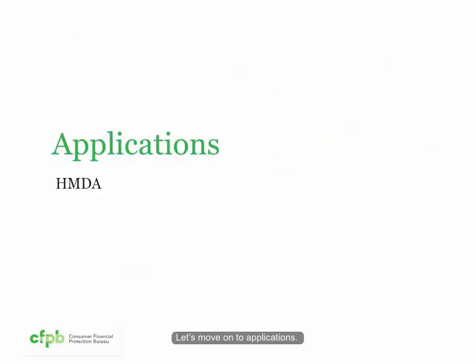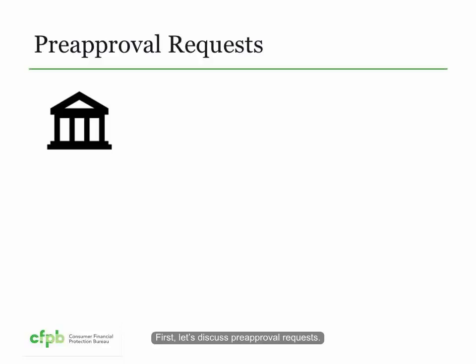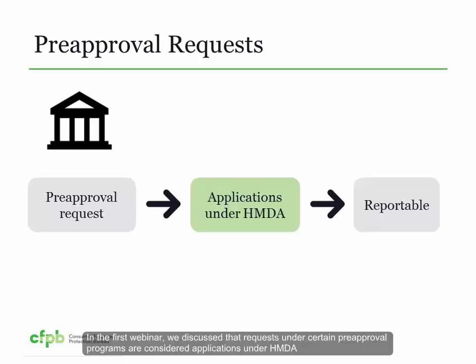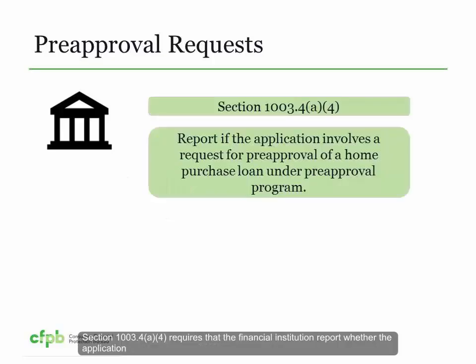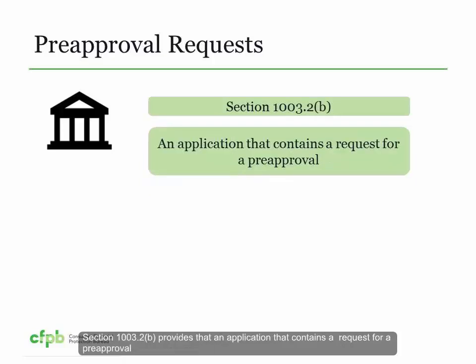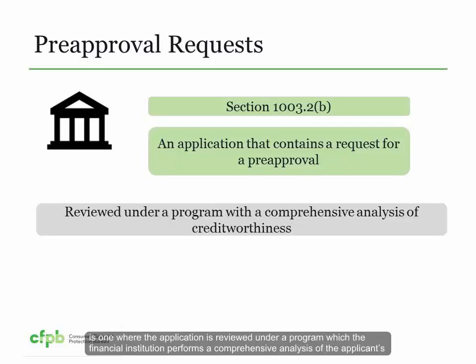Section 1003.4(a)(34) requires that the financial institution report the mortgage loan originator's unique identifier assigned by the Nationwide Mortgage Licensing System and Registry, also known as the NMLSR ID. It is assigned to individuals registered or licensed through the National Mortgage Licensing System and Registry to provide loan originating services. If there is more than one mortgage loan originator involved in a transaction, the financial institution reports the NMLSR ID of the individual who had primary responsibility for the transaction as of the date of action taken.